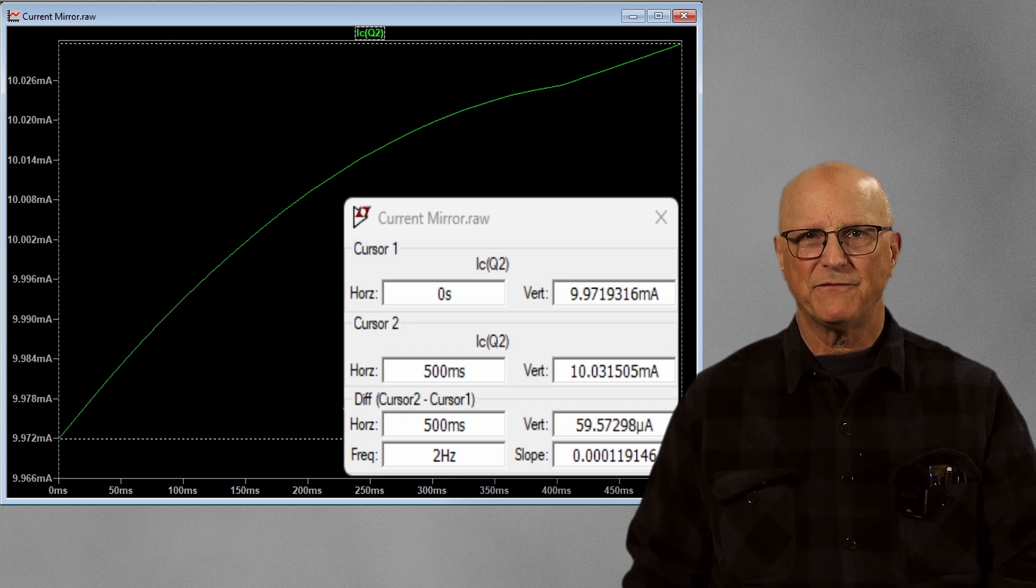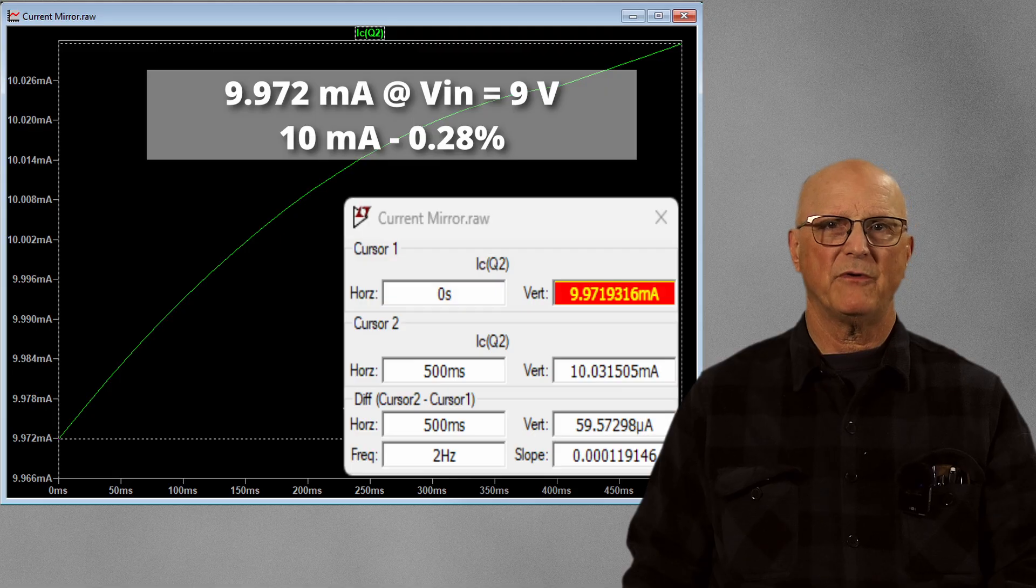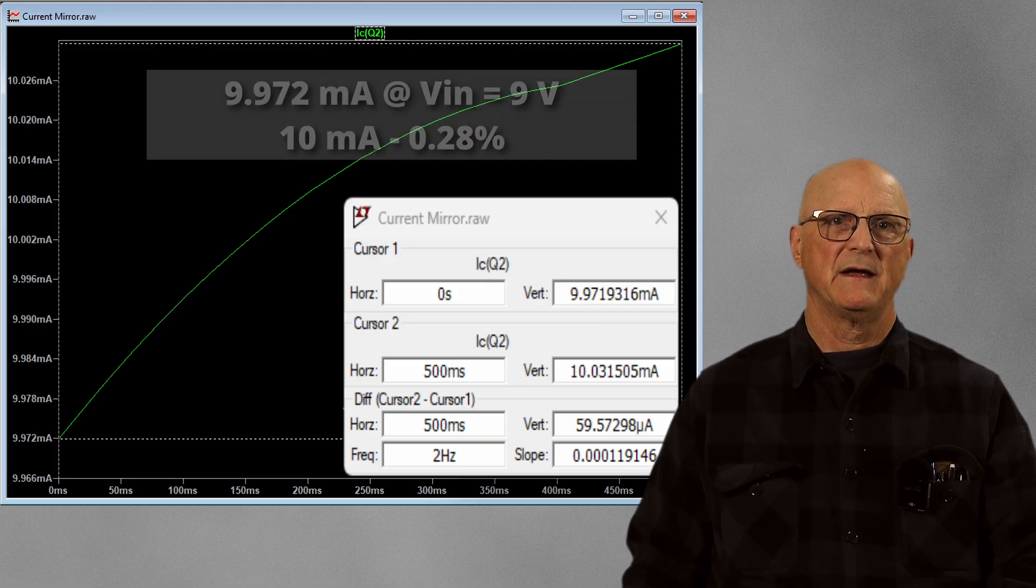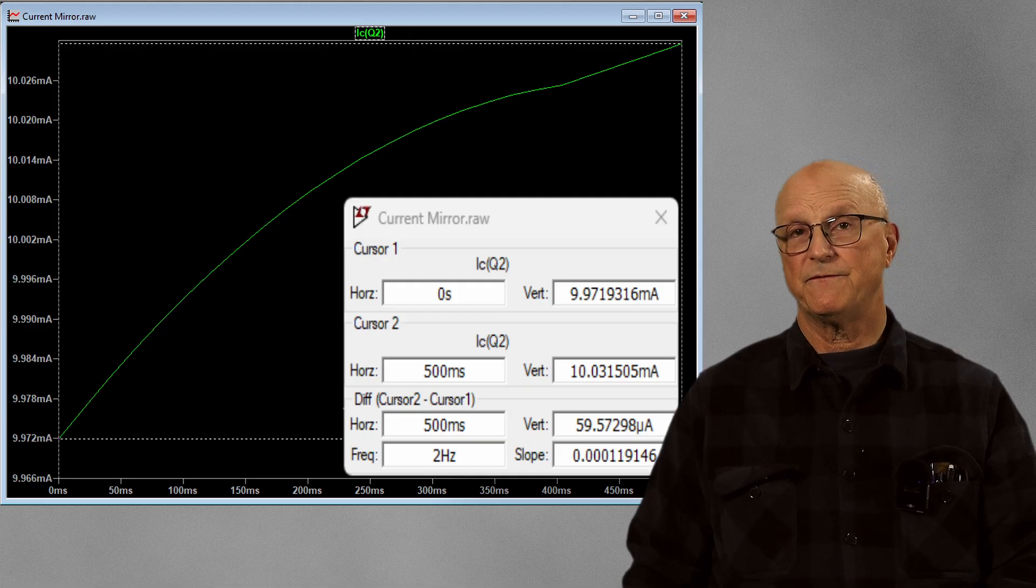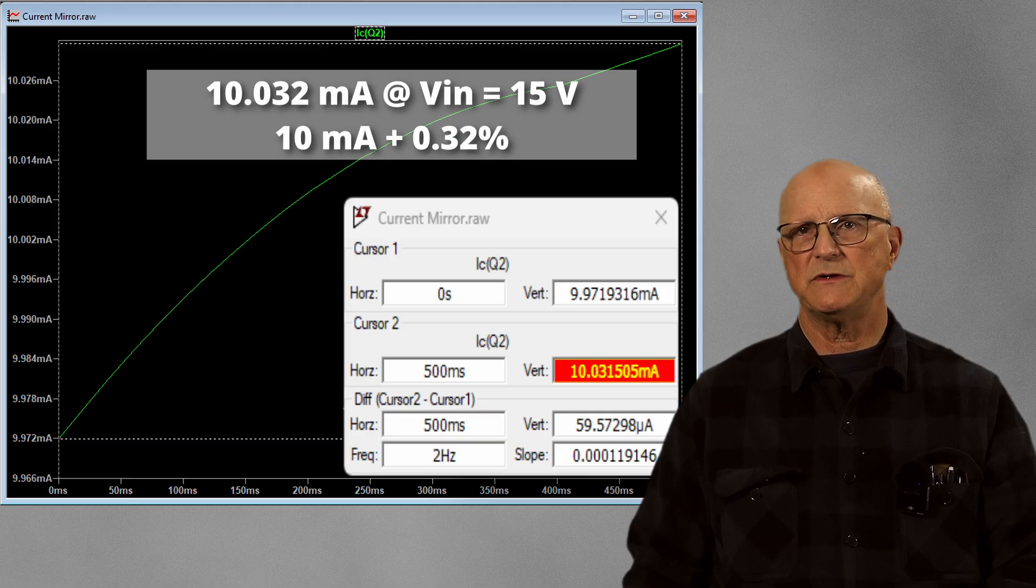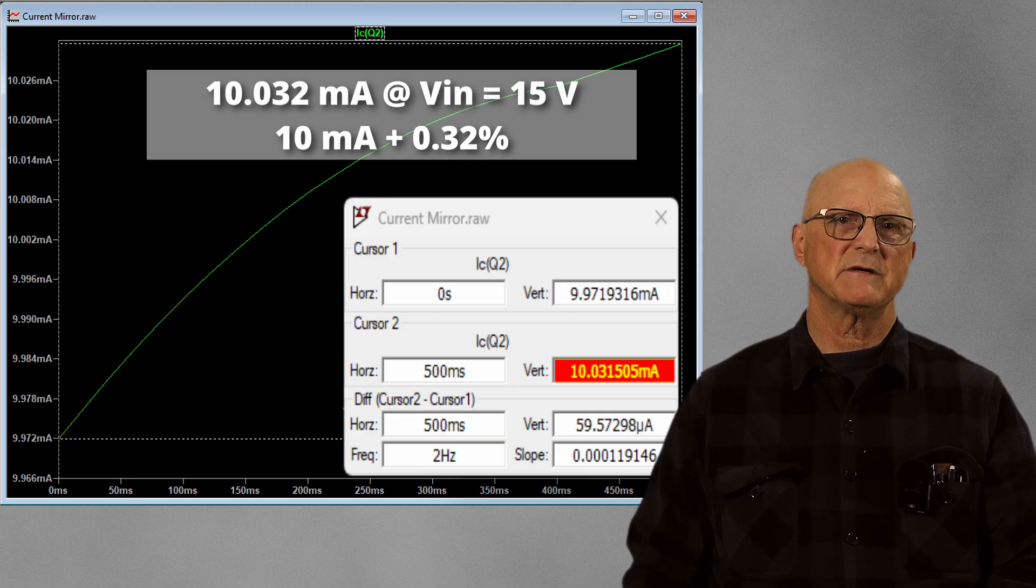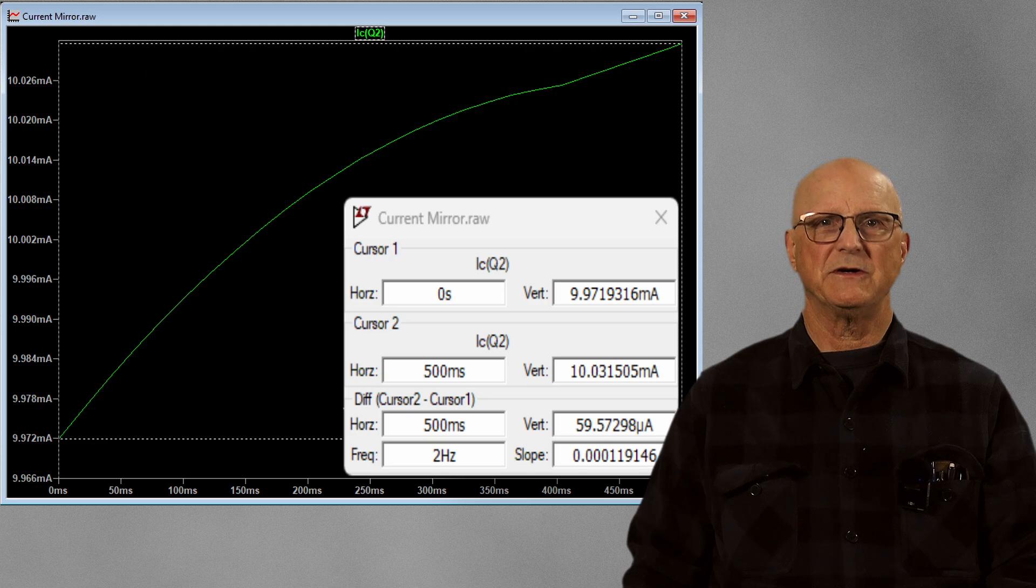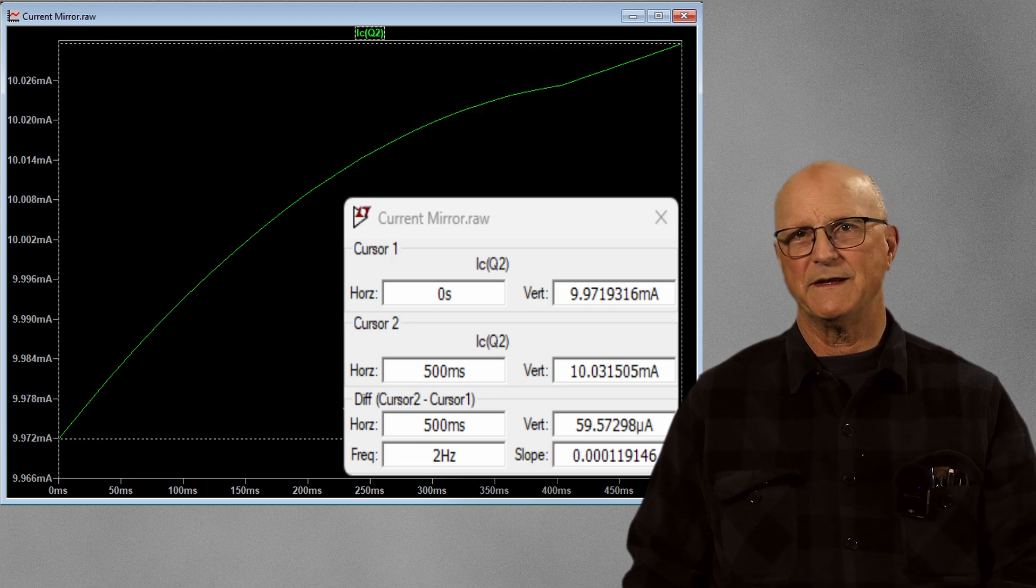When the input voltage is at 9 volts, we have an output current of 9.972 milliamps. This is 0.28% low of our target of 10 milliamps. And with the input voltage of 15 volts, the output current is 10.032 milliamps, and this is a mere 0.32% high of our target at 10 milliamps. This is also a very, very nice result.